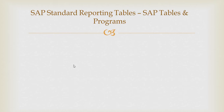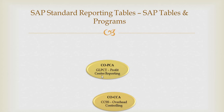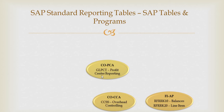SAP standard reporting tables — let's look at the tables and programs used for each sub-module. For profit center accounting, we use the GLPCD table. For cost center accounting, we use the CCSS table, which is overhead controlling. FIAP is a standard SAP program you can use for creating reports.